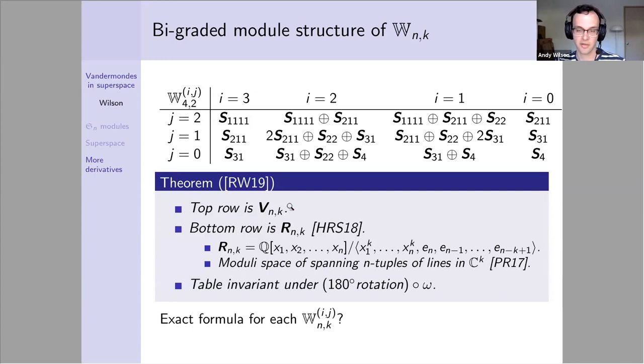It's automatic that the top row is this V_{n,k} module again, because before we just didn't take any theta derivative. The bottom row, we get this quotient ring that appeared in Sean's talk, defined by Haglund, Rhoades, and Shimozono as starting with polynomials in x variables and taking a certain quotient. Pawlowski and Rhoades showed this is the cohomology of moduli space of spanning n-tuples of lines in C^k. The non-trivial part of this theorem is that this table is invariant under this action: you apply omega, twist by the sign or conjugate the partition, then 180 degrees rotate the table. You get the same table back.